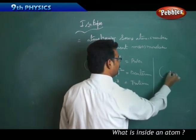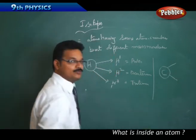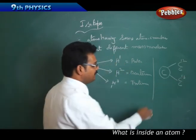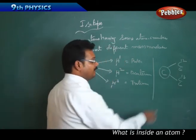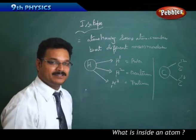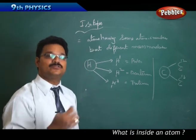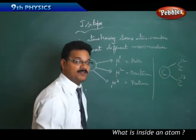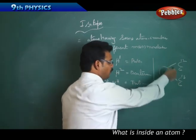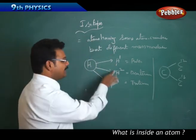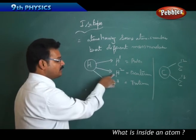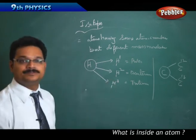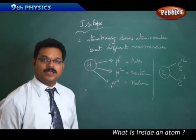Carbon also has isotopes: C-6-12 and C-6-13. Both have the same atomic number of 6, but mass numbers of 12 and 13. The mass number changes because of a change in the neutron number. For C-6-12: neutrons = 12 minus 6 = 6. For C-6-13: neutrons = 13 minus 6 = 7. So in isotopes, the number of neutrons changes.